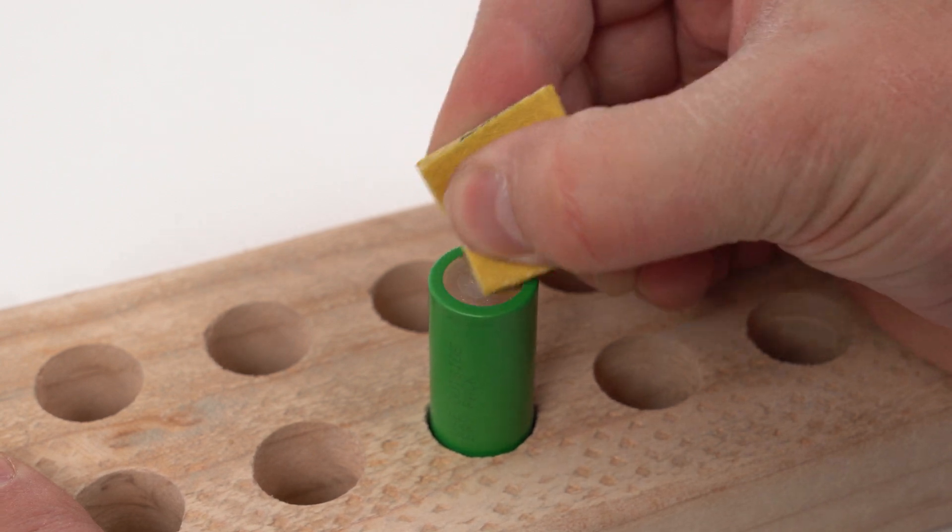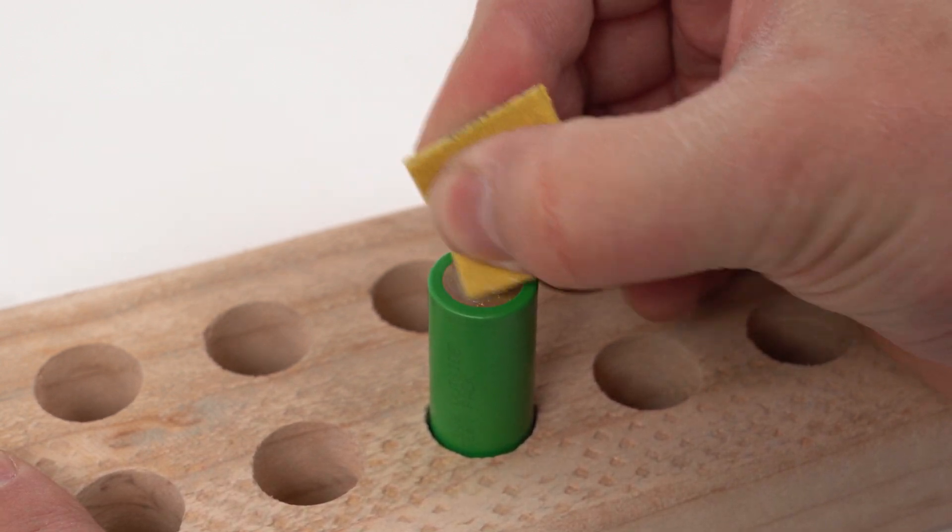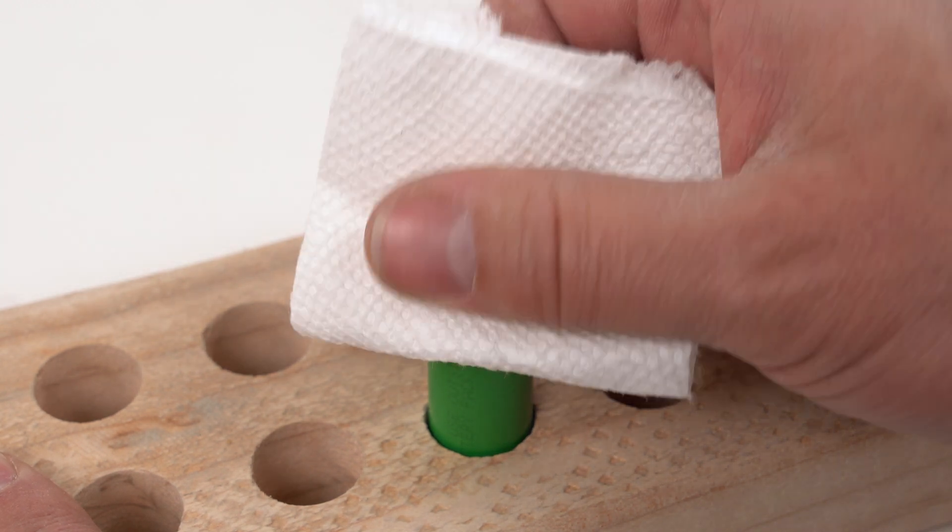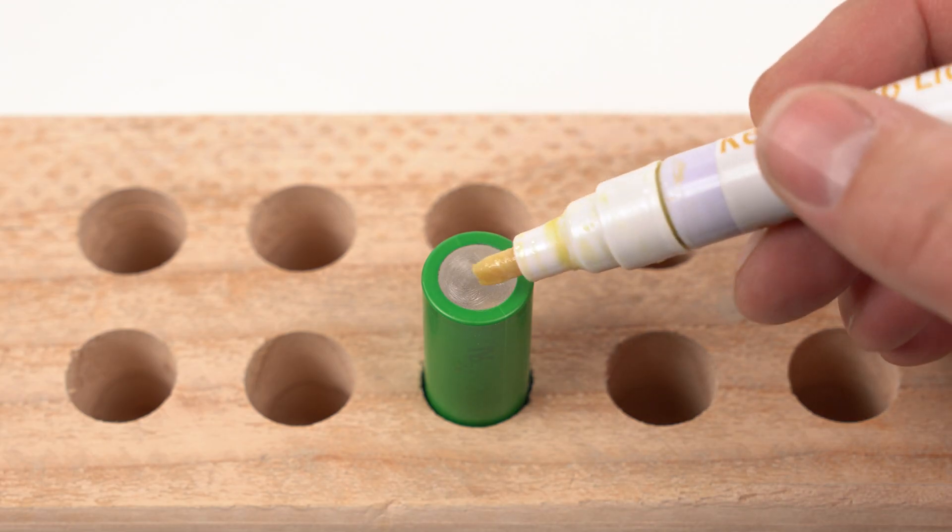Use sandpaper to rough up all the ends of the cells you'll be soldering. Clean the ends of the cells. Apply flux.